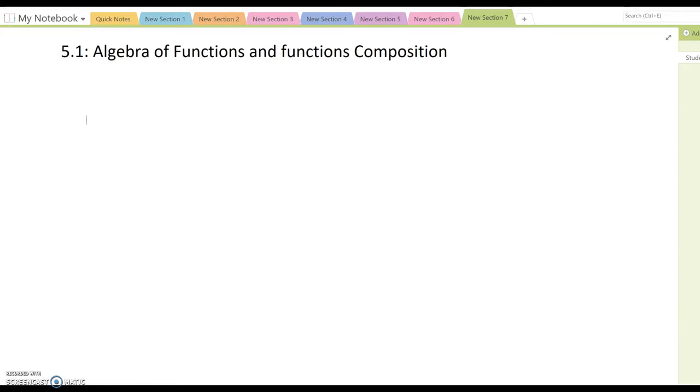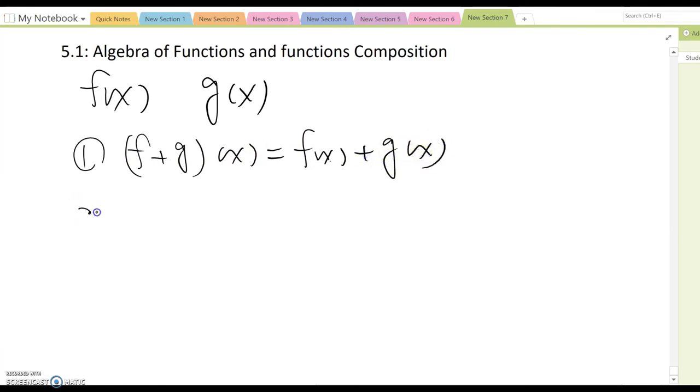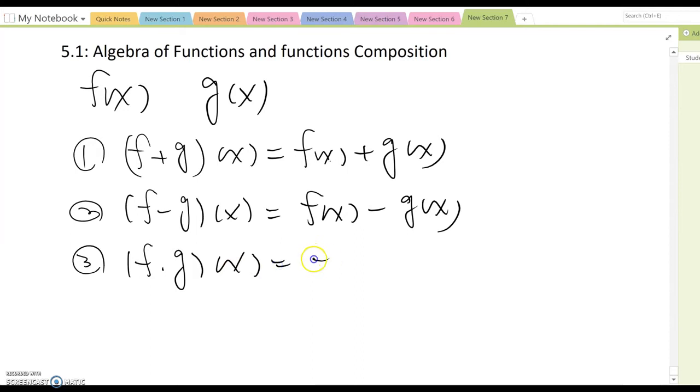So first of all, the regular combining functions. If two functions f(x) and g(x) are given, then we can make four different simple calculations or combined functions. The first one is (f+g)(x) which means f(x) plus g(x). Number two: (f-g)(x) equal to f(x) minus g(x). Third, (f·g)(x), then this becomes f(x) times g(x).